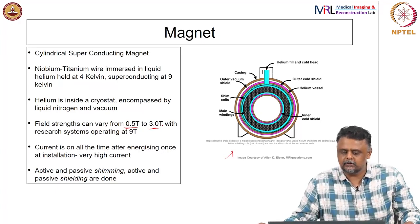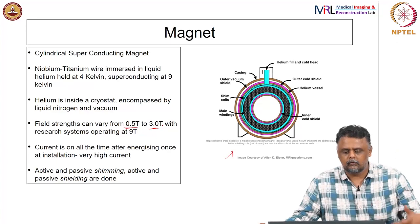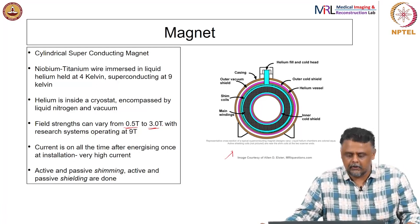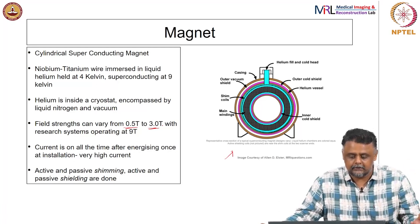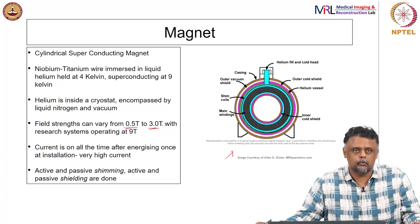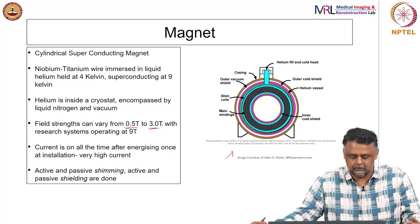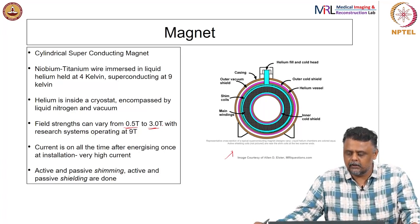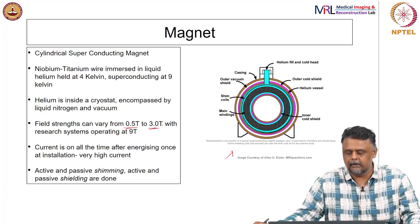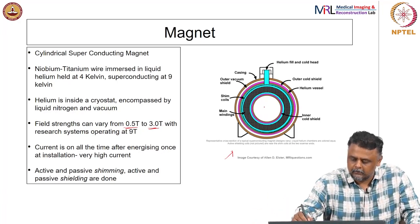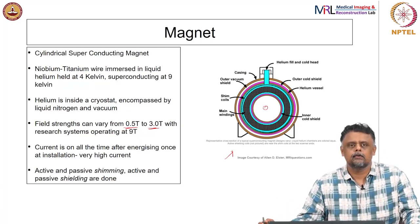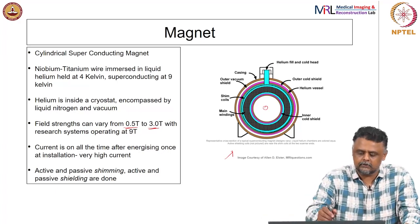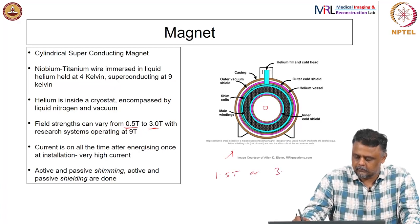The wire is wound around a cylindrical core and energized once. As soon as the critical temperature is reached, you inject current into it and the current keeps flowing because it is superconducting — there is not much loss due to resistance, though over time it will dissipate. This sets up a static magnetic field pointing along the axis of the core, typically 1.5 or 3 tesla for modern clinical magnets.